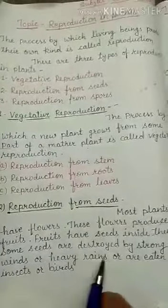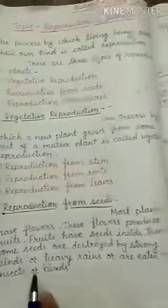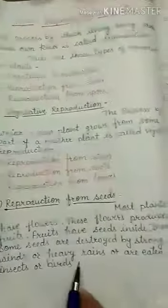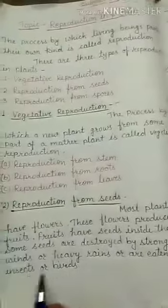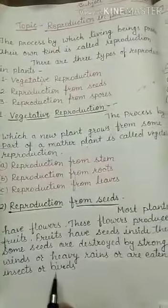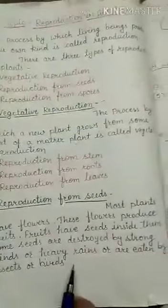Some seeds are destroyed by strong winds or heavy rains, or are eaten by insects or birds.